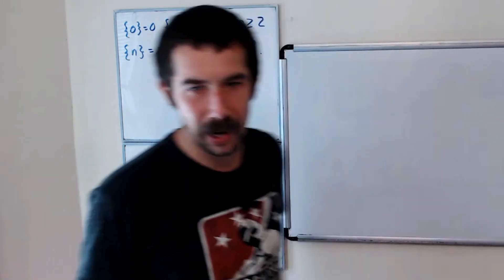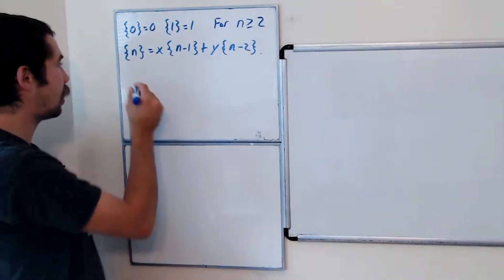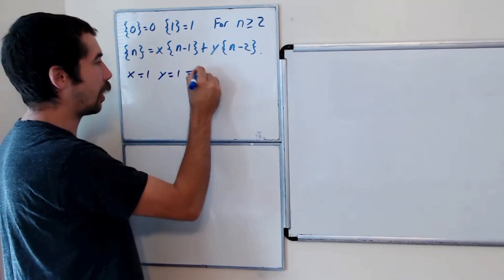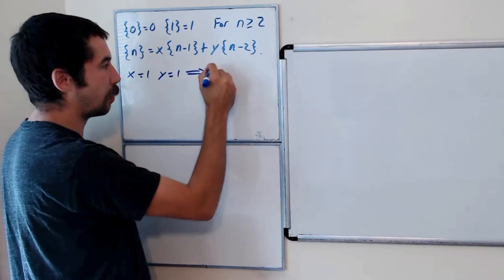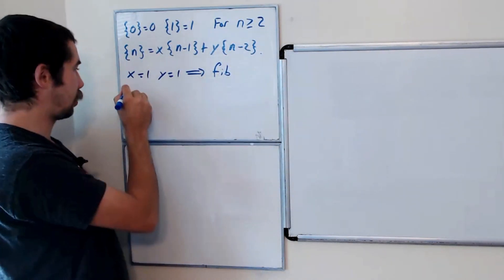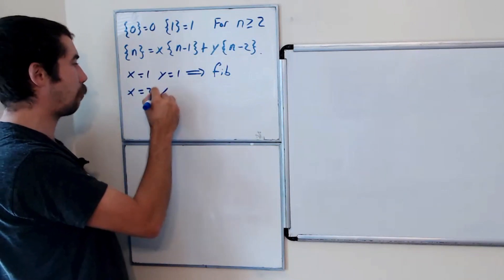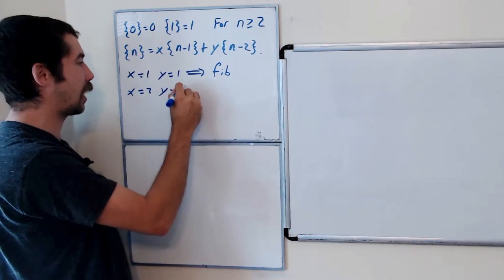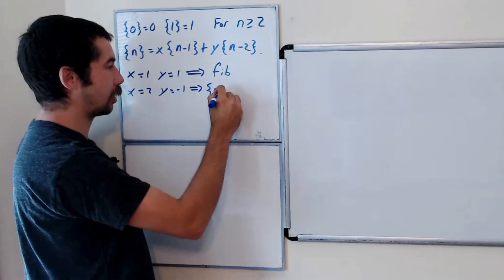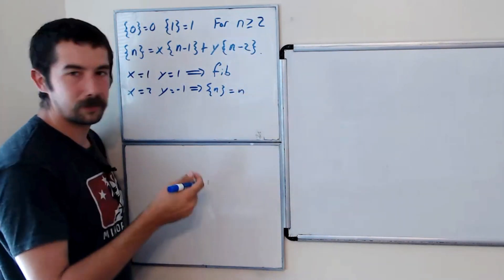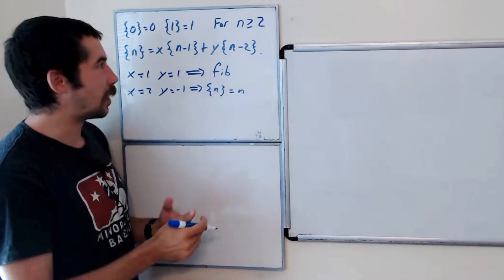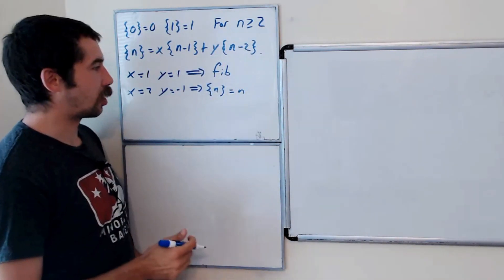This isn't what we're going to talk about today, but as a reminder: if you set x equals 1 and y equals 1, you get the Fibonacci sequence. If you set x equals 2 and y equals negative 1, you get bracket n equals n. So you get some interesting sequences that you can study from these Lucas polynomials.